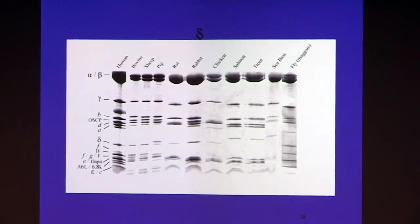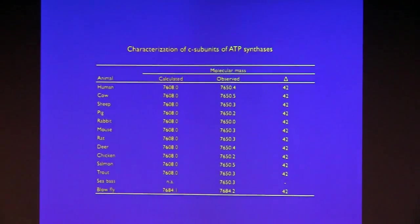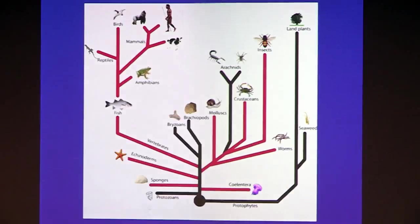And so we've worked our way now through many species. We've isolated the C protein, we've measured its mass. And in every single case we've looked at, and there are many more than here, there's an additional mass of 42 corresponding to trimethylation.